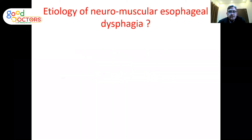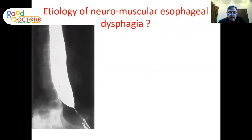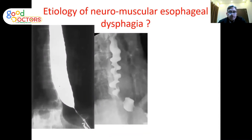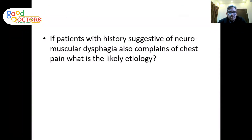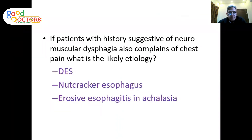Possible neuromuscular causes of esophageal dysphagia include achalasia — where the distal esophagus is closed and there is no esophageal motility — diffuse esophageal spasm, nutcracker esophagus, or scleroderma/systemic sclerosis, in which the esophagus fails to move and the lower esophageal sphincter becomes incompetent. If pain is present in neuromuscular dysphagia, diffuse esophageal spasm, nutcracker esophagus, and erosive esophagitis in achalasia should be considered.